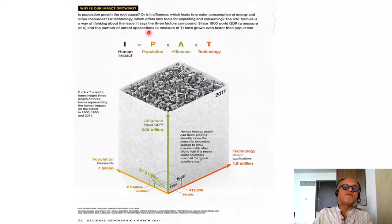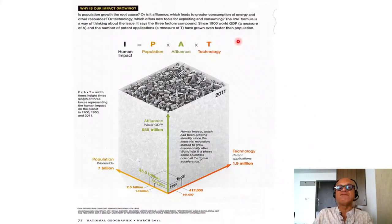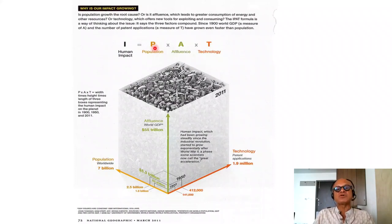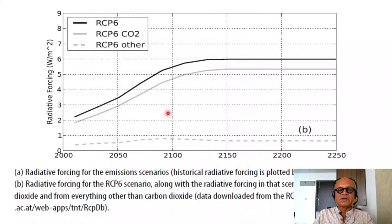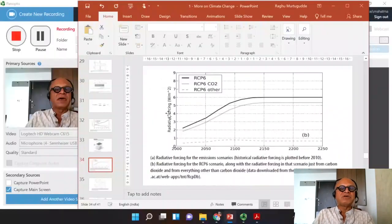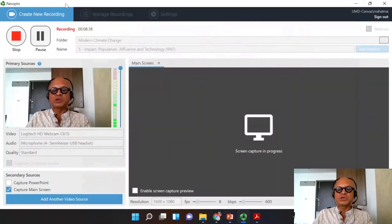The IPAT formula is a way of thinking about the issue — the three factors compound. Since 1900, world GDP as a measure of affluence and patent applications as a measure of technology have grown even faster than population. The main point is that it's easy to say population is the problem, and it is in terms of habitat pressures and conflicts with wildlife, but if we focus on emissions and global warming, we must carefully consider affluence and technology as well.